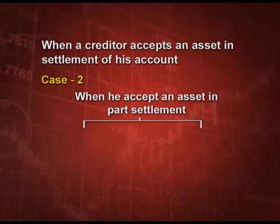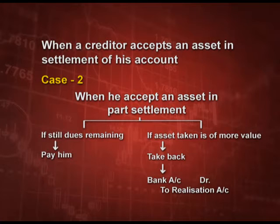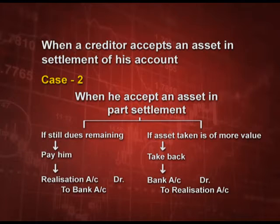But when he accepts an asset in part settlement of his account, there can be two points. First, if still something is due to him, then we have to pay him. And if the asset value is more than what is due to him, then he will pay to us. For example: creditor is 10,000 and we are giving him an asset whose value is 15,000 — he will give 5,000 rupees to us and that will be bank account debit to realization account. But if we are paying to him, then realization account debit to bank — it is an expense and shown on the debit side. If we are paying, it is an expense; if we are receiving, it is income. Income comes on the credit side and expense on the debit side.